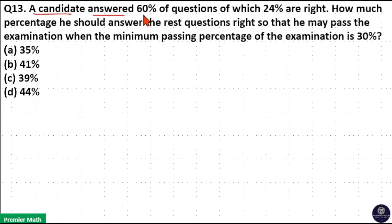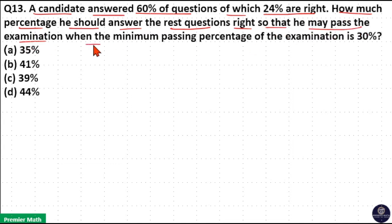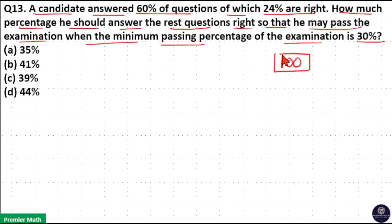A candidate answered 60% of questions, of which 24% are right. How much percentage should he answer the rest of the questions correctly so that he may pass the examination, when the minimum passing percentage is 30%? Let us consider 100 as the total number of questions, so he needs to answer 30 correctly.